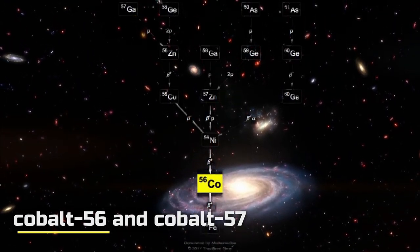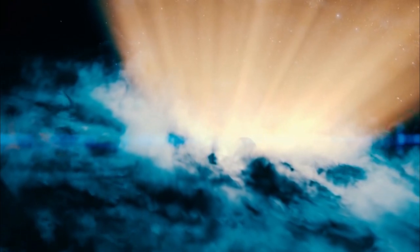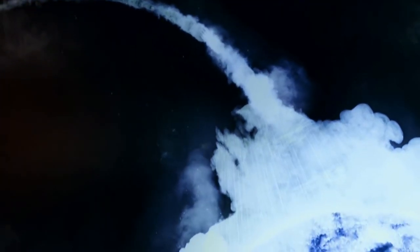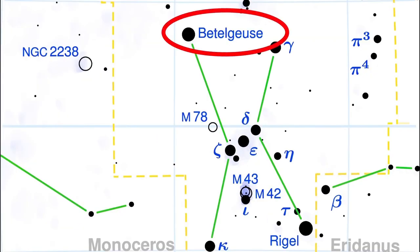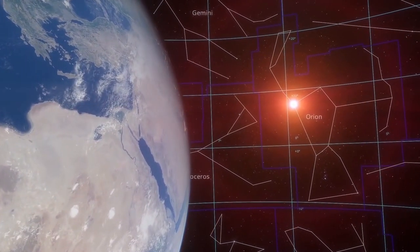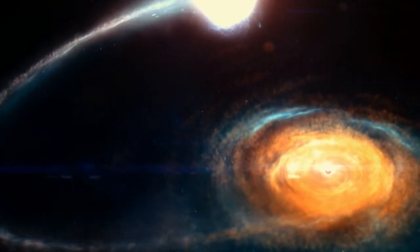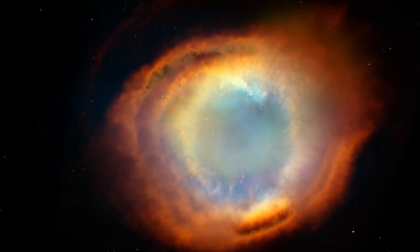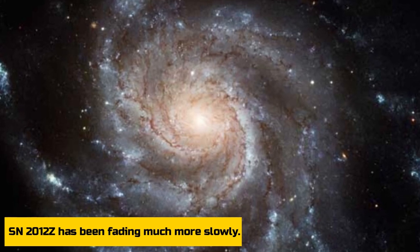Typically, the cobalt-56 and cobalt-57 isotopes in the material ejected into space are what generate the light of a Type Ia supernova. Isotopes are atoms with various numbers of neutrons but the same number of protons and electrons. Due to the decay of the majority of the cobalt within a few years and the subsequent sharp fading of the supernova's light, these isotopes have half-lives of 77 and 271 days, respectively. If radioactive decay is the main light source, it must be an isotope with a substantially longer half-life, because SN2012Z has been fading much more slowly.